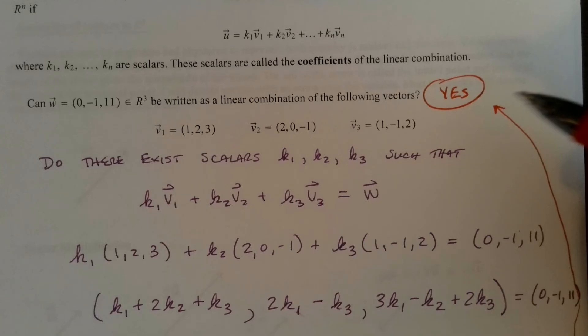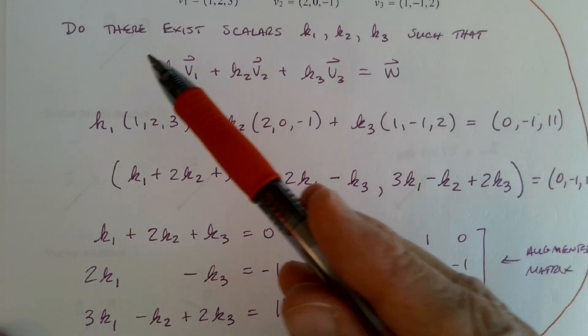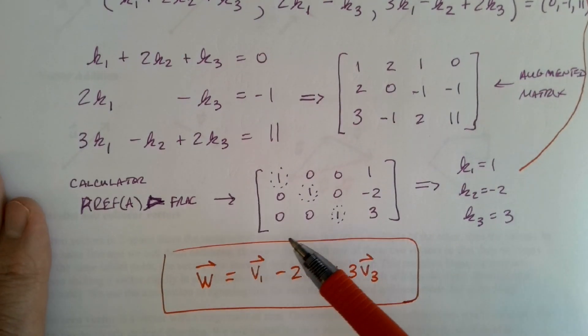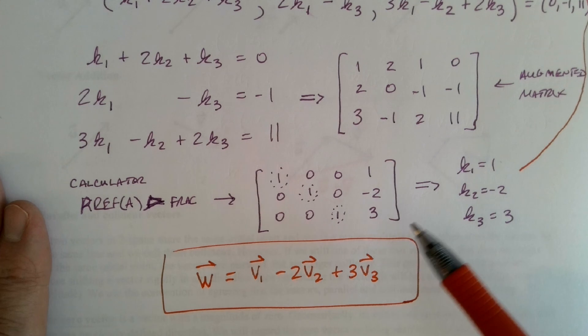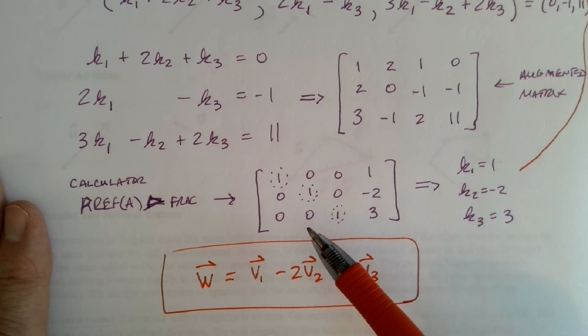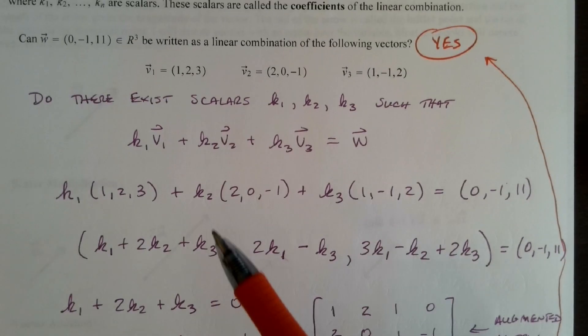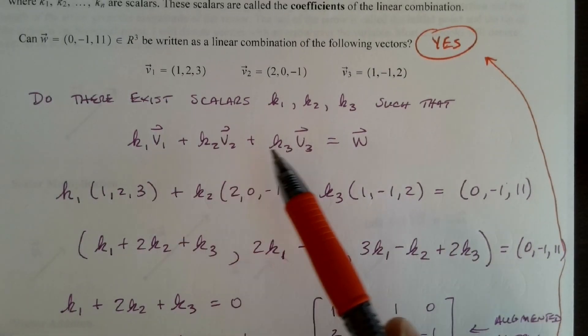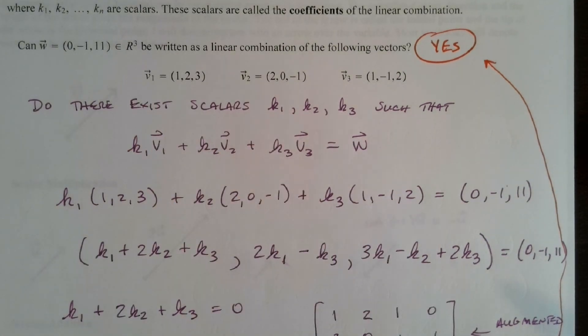Now, when would I answer no to this question? Well, I would answer no when there wasn't such scalars. In other words, when I got down here and I had a situation where I had no solution, if this indicated down here, like if I had 0, 0, 0, 1, for instance, if I had that for my reduced row echelon form, I would know it's an inconsistent system and I would know there's no solution. So if there's no solution, there's no such value of these scalars where we can write this equation out, meaning that we would not be able to write this vector as a linear combination of those vectors, and that could happen.